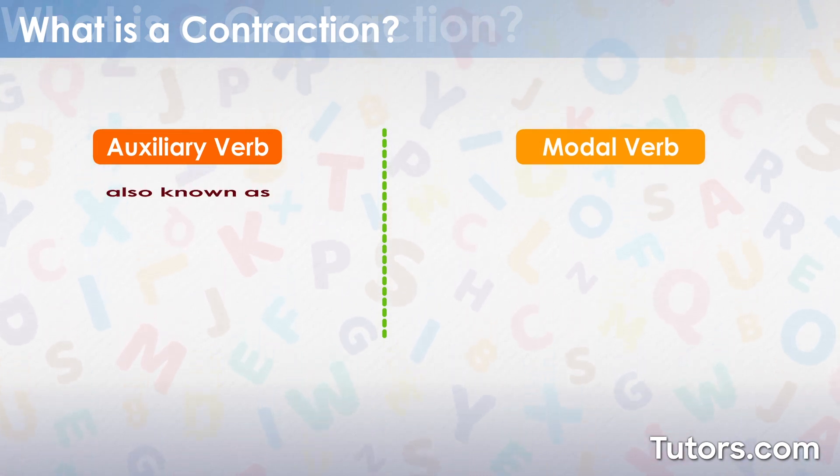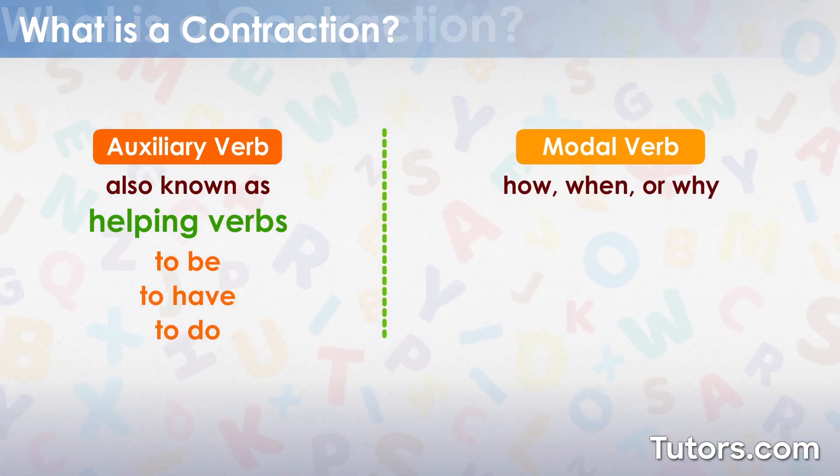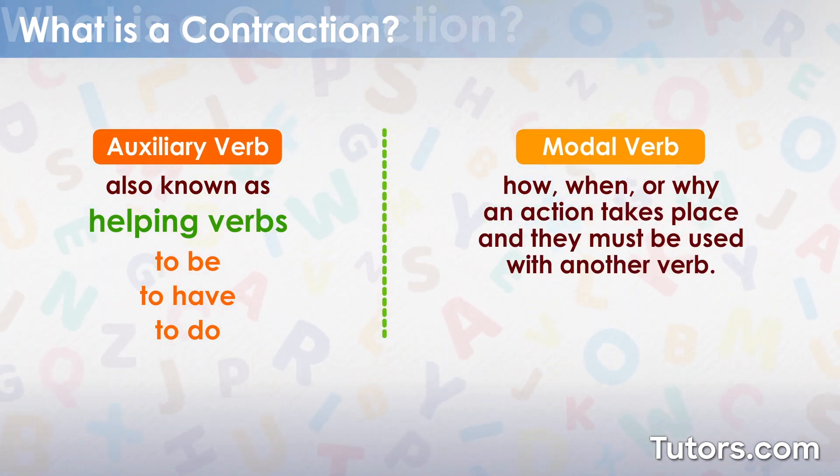Auxiliary verbs are also known as helping verbs. They are verbs like to be, to have, and to do. Modal verbs indicate how, when, or why an action takes place, and they must be used with another verb.